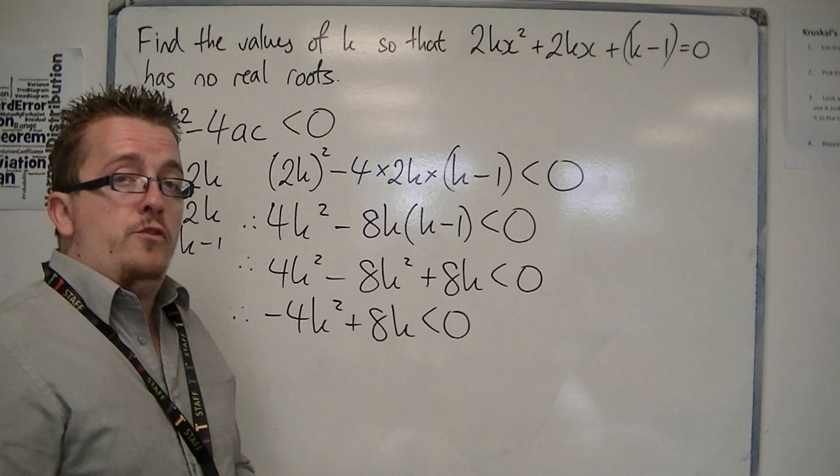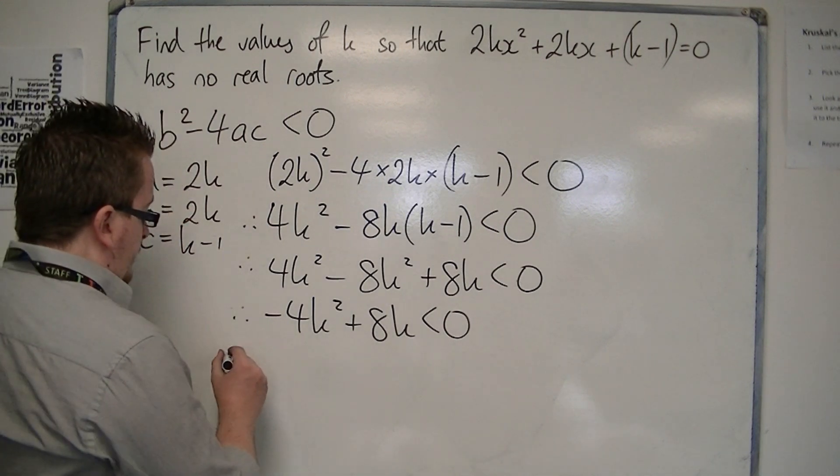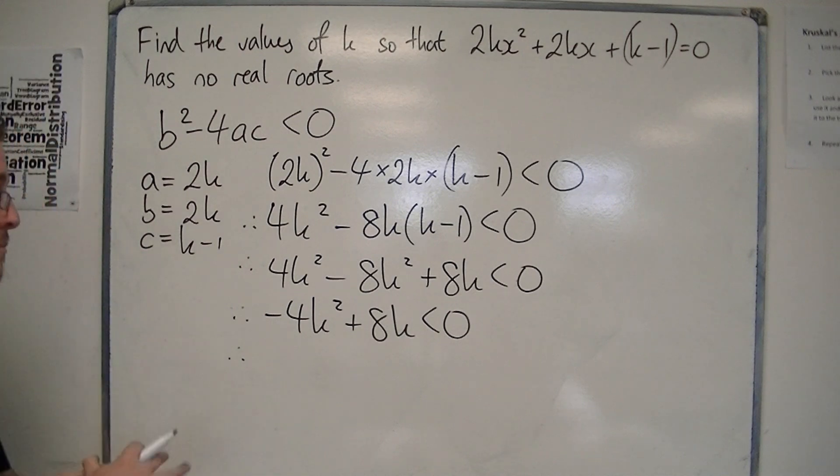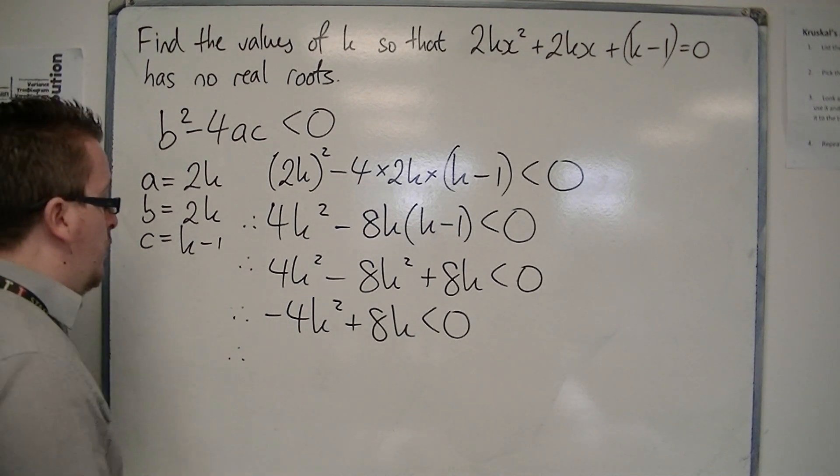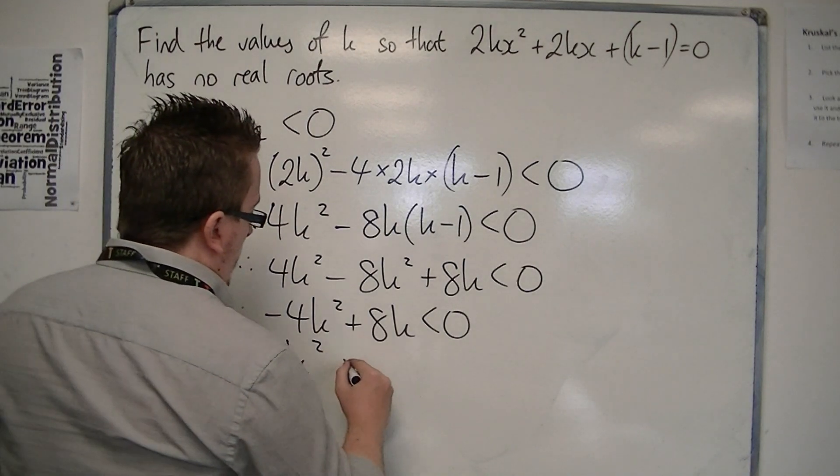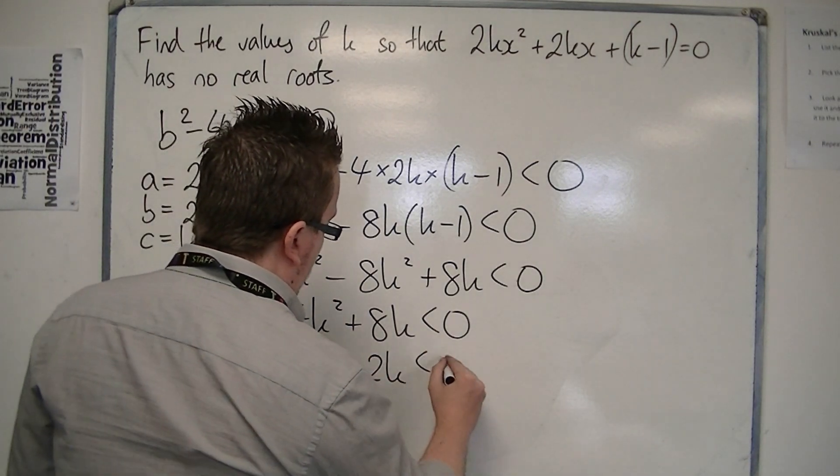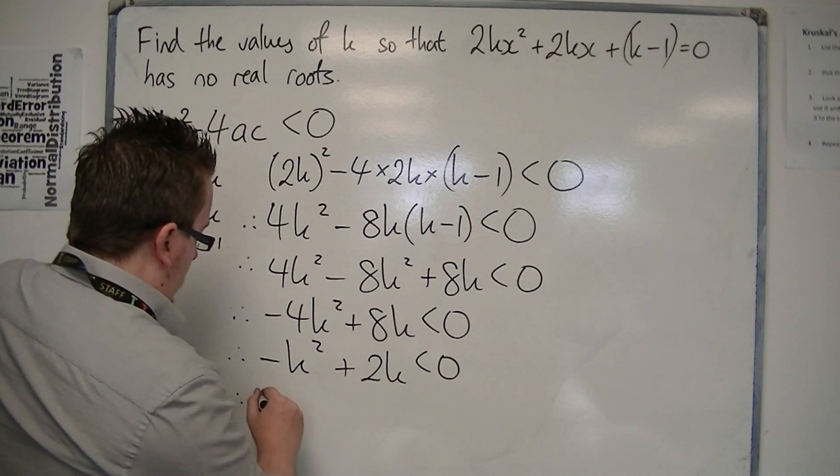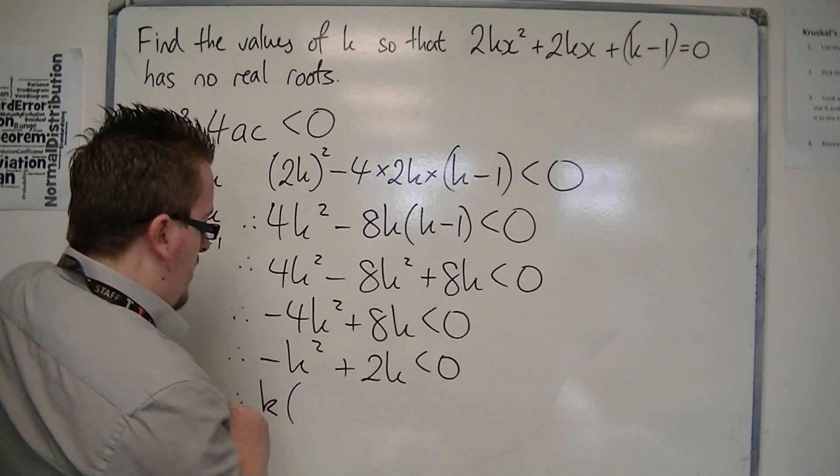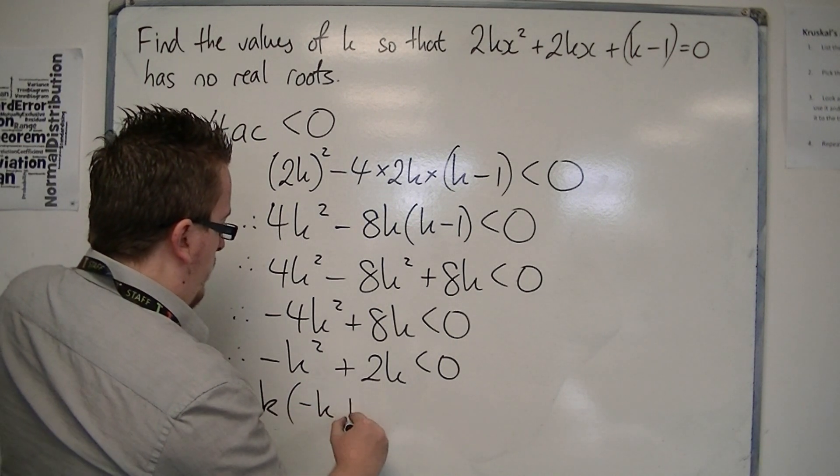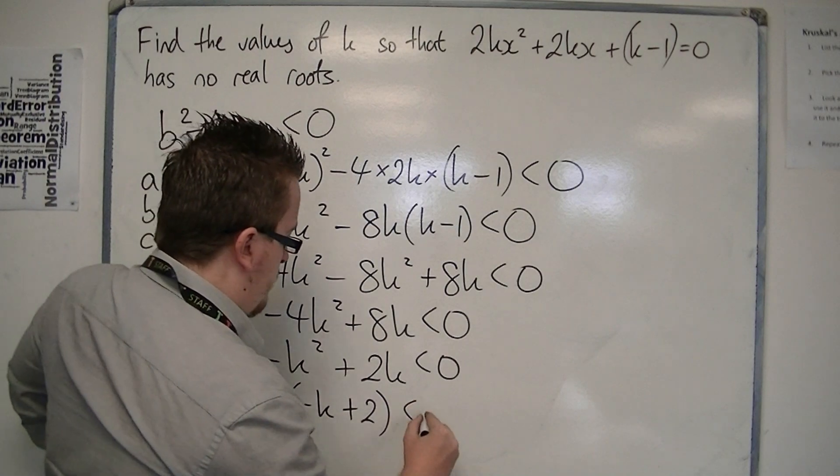This can be divided through by 4. At this stage you could divide through by minus 4 if you like, but I'm just going to divide by 4. We get -k² + 2k < 0. This can be factorized by taking k outside the bracket to get k(-k + 2) < 0.